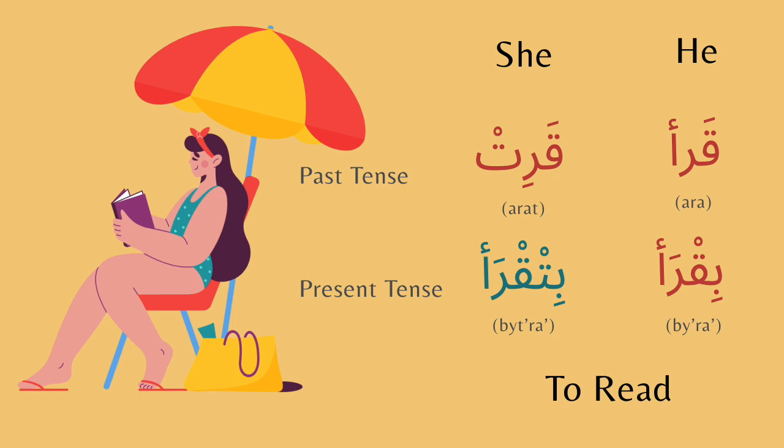The next verb is to read. The past tense for he is ara. Here we have a qaf, but in some Levantine dialects we replace the qaf with a Hamza sound. The past tense for she is arat. Moving on to the present tense, for he it would be biara. For she it would be bitiara.